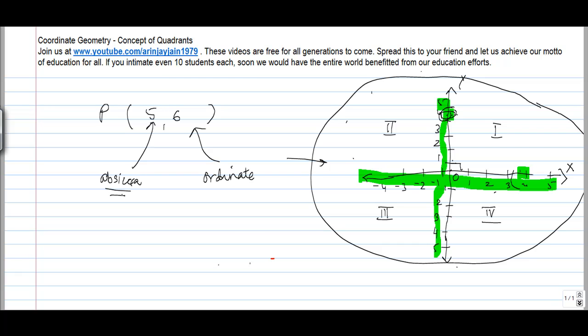Now abscissa is basically nothing but the distance of the point from y. So basically if suppose I had a point P, here is the distance of P from y, which is equal to the distance on the x-axis, is called the abscissa.